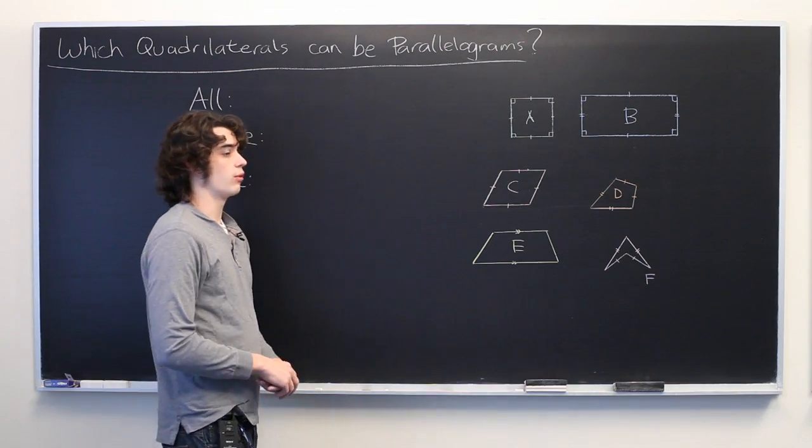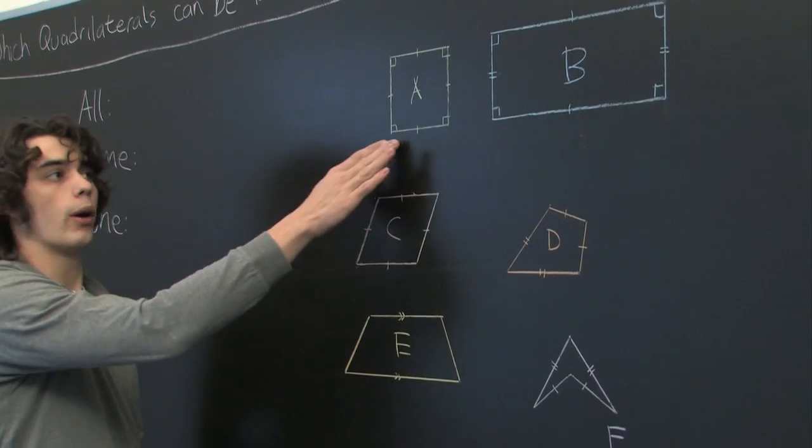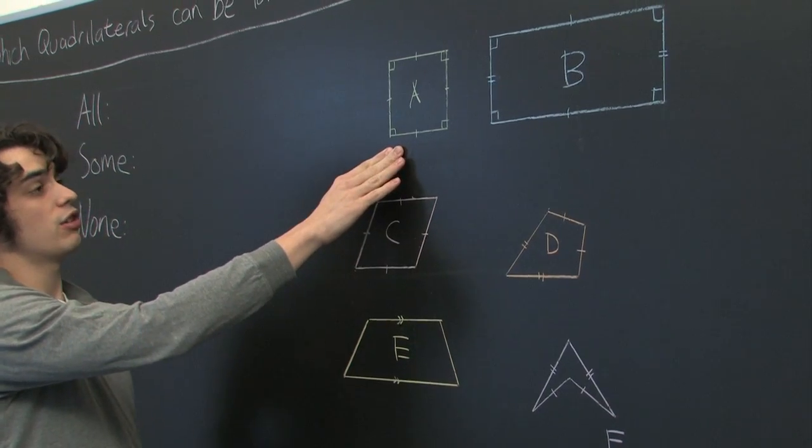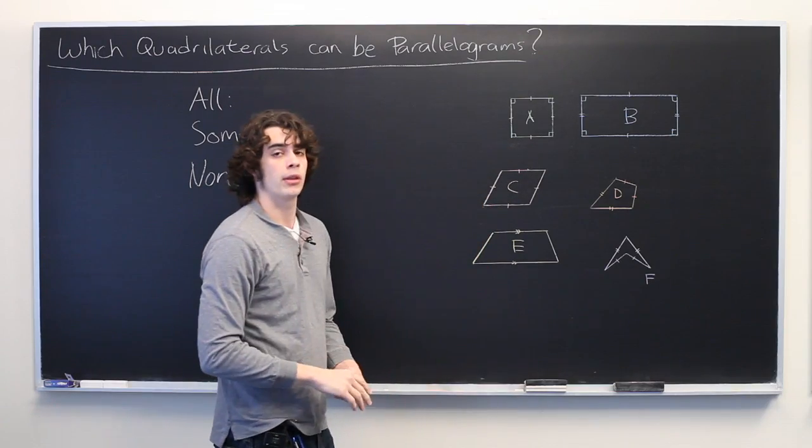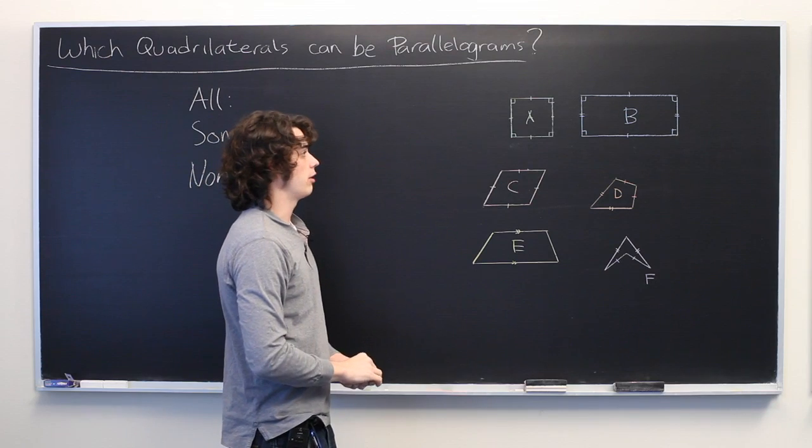Here we have six different classes of quadrilaterals. We have squares, the definition of which is all four sides are of the same length, and all interior angles are 90 degrees.